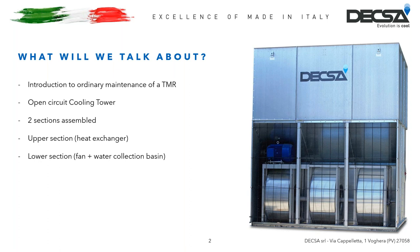The lower front section has the water collection basin in the back side and the centrifugal transmission system in the front. The list of activities to be carried out will begin from this tower's lower section. Ordinary maintenance activities are performed when machine downtime is foreseen. If the plant serves, for example, the conditioning of a hospital or a shopping center, the cooling tower is operational for about eight months per year.